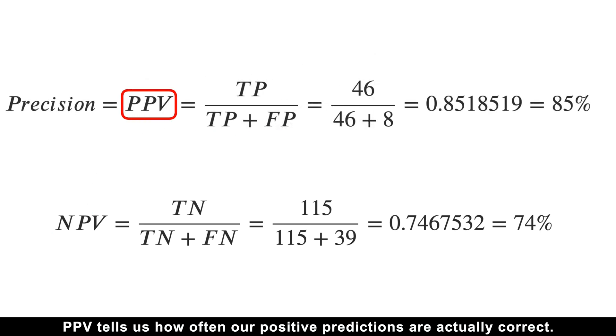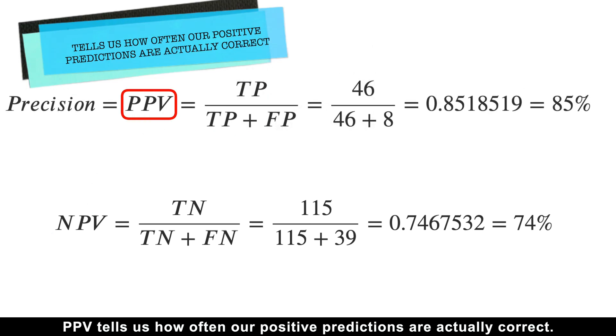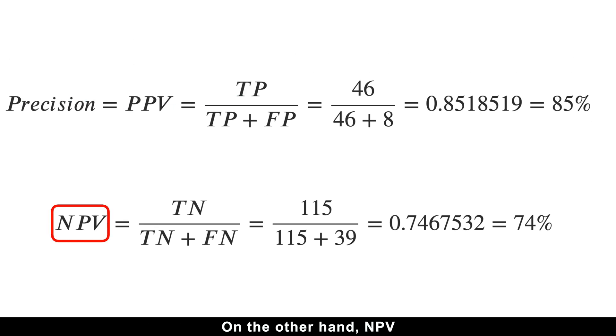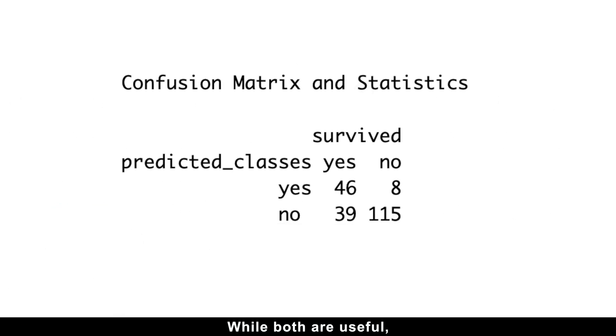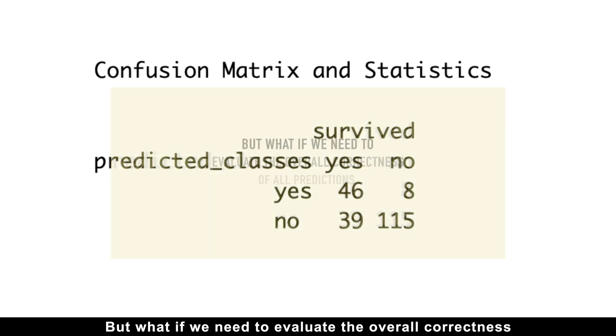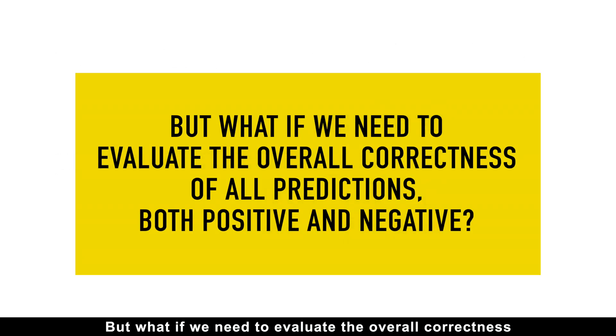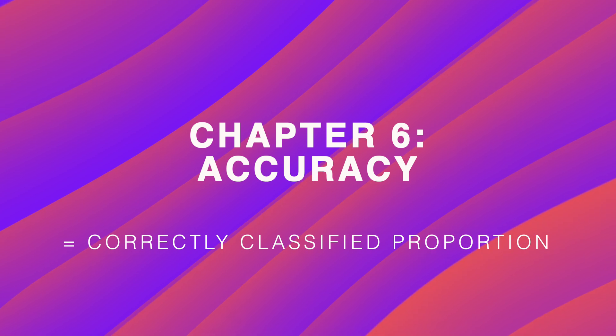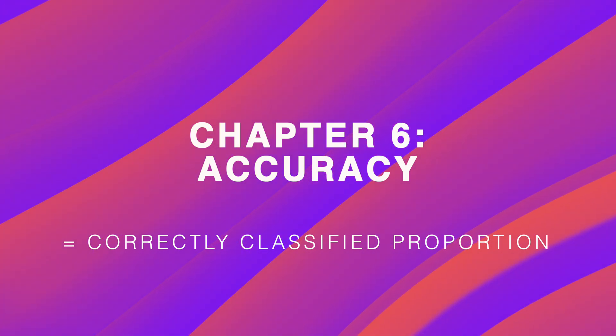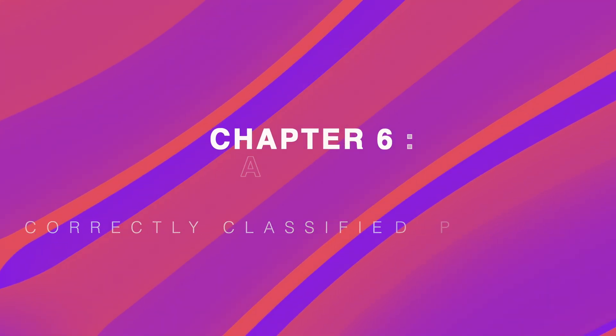So, positive predictive value tells us how often our positive predictions are actually correct. On the other hand, negative predictive value measures how accurate our negative predictions are. While both are useful, they focus on only one side of the prediction outcomes, either positives or negatives. But what if we need to evaluate the overall correctness of all predictions, both positives and negatives? That's where accuracy comes in. Accuracy gives us the big picture performance by measuring the proportion of all correct predictions, regardless of class.